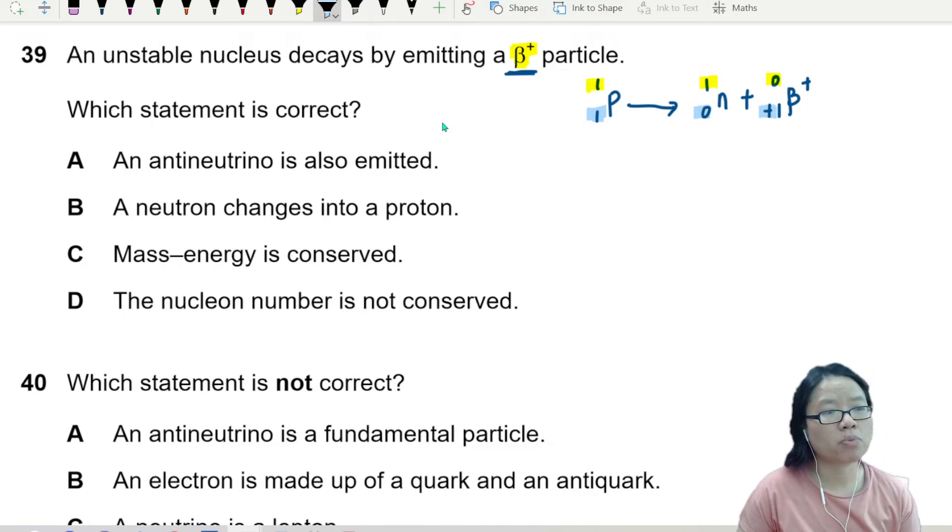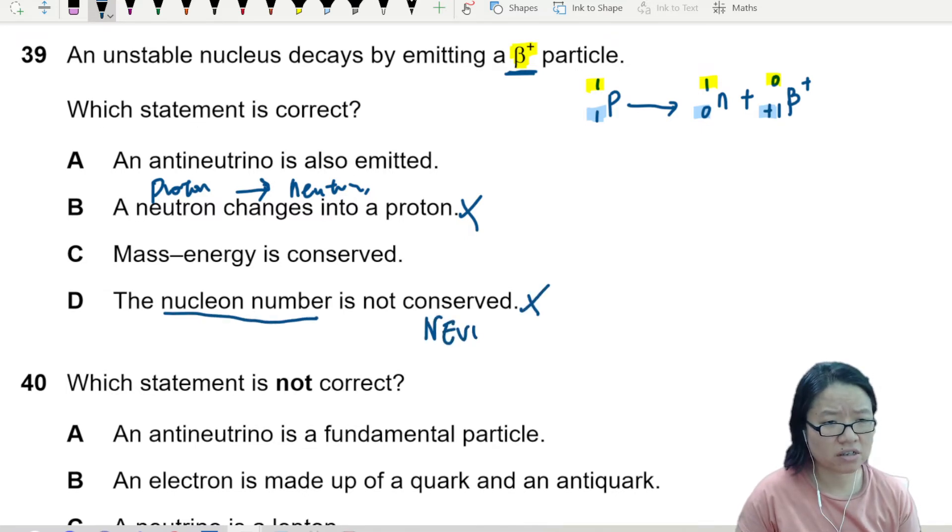So we're talking about proton to neutron - wrong, not neutron changing to proton. It should be the other way around: proton to neutron. Nuclear number not conserved? Never. Nuclear number must always conserve. Okay, now you got this too.